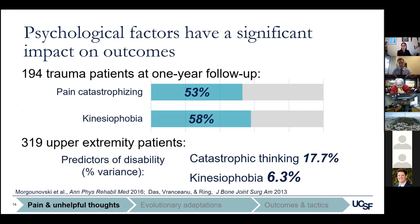Research across multiple orthopedic specialties — arthroplasty, trauma, sports, and upper extremity — has shown that pain misconceptions are common and impact outcomes. One study of 194 trauma patients found that at one-year follow-up, 58% had kinesiophobia and 53% had pain catastrophizing. Among patients with common upper extremity conditions such as trigger finger, carpal tunnel, first CMC arthritis, and distal radius fractures, depression, catastrophic thinking, kinesiophobia, and pain anxiety were all associated with lower functional scores. In a multivariable regression analysis, catastrophic thinking and kinesiophobia were the strongest independent predictors of function, accounting for 17.7% and 6.3% of the variance respectively.